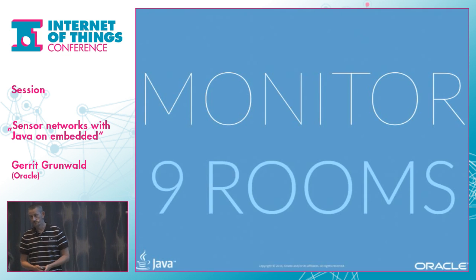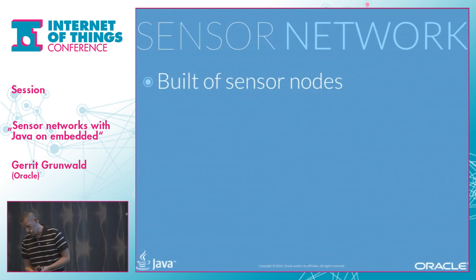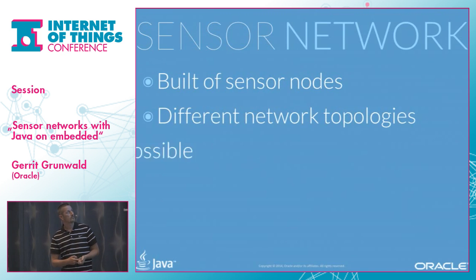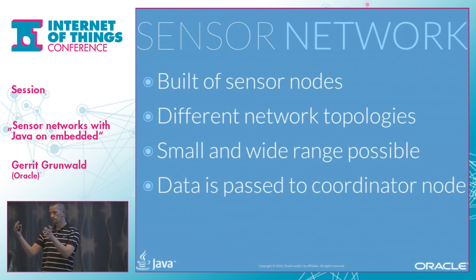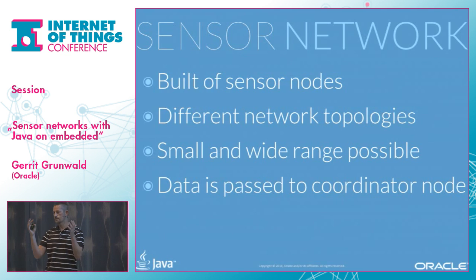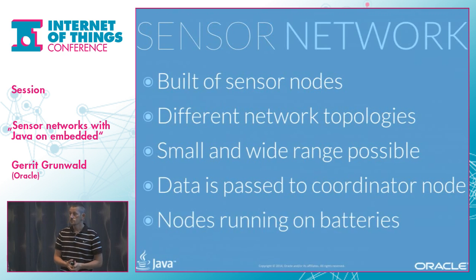Let's start with monitoring nine rooms. I created a sensor network. It's a network made of sensor nodes that support different network topologies — small range or wide range networks. Usually data is passed from sensors to one coordinator node, also called a gateway node. From there you can connect a PC, put it on the web, on the cloud, or whatever you like. Usually the sensor nodes themselves are very small, running on batteries, just collecting data. And one important thing is the nodes should run on batteries — I'll explain why in a couple of minutes.